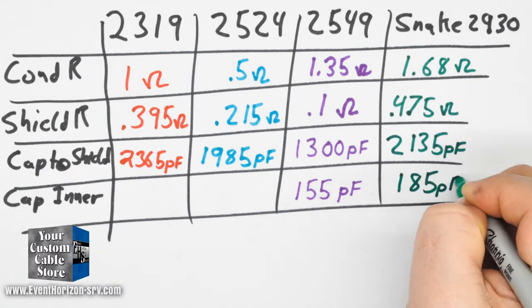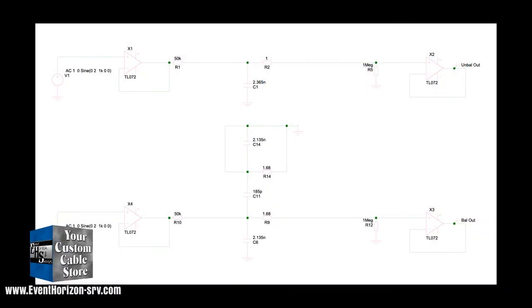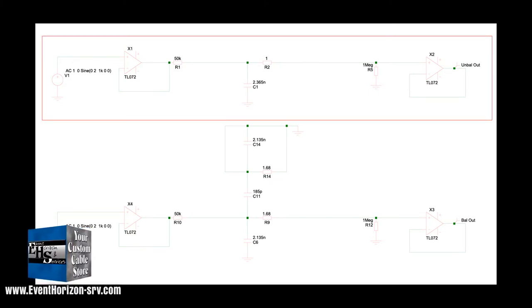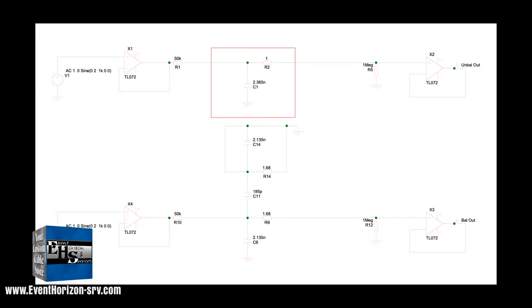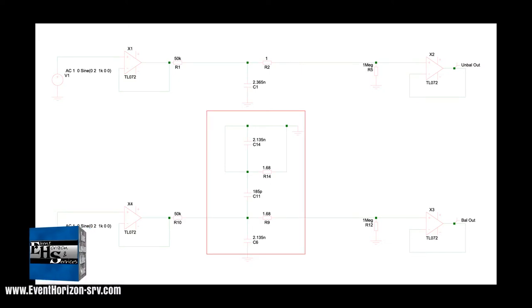First let's go to the computer simulated test. Basically using the same method as the first two tests, but we're adding a test for the balanced cable. So the top circuit is an unbalanced cable just as before. The new bottom circuit is a balanced cable. This section represents unbalanced wire and this section represents the balanced wire.